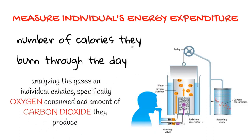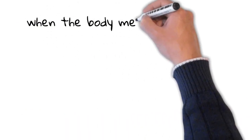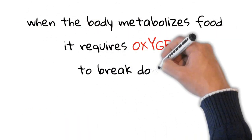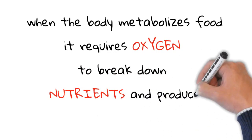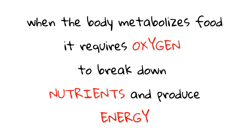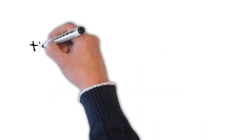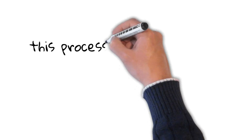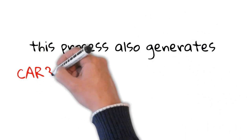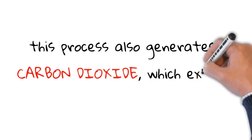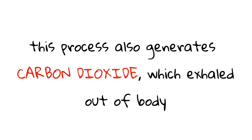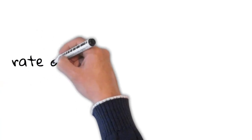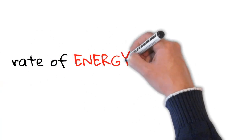The principle behind indirect calorimetry is simple. When the body metabolizes food, it requires oxygen to break down nutrients and produce energy. This process also generates carbon dioxide, which is then exhaled out of the body. By measuring the amount of oxygen consumed and carbon dioxide produced, the rate of energy expenditure can be calculated.